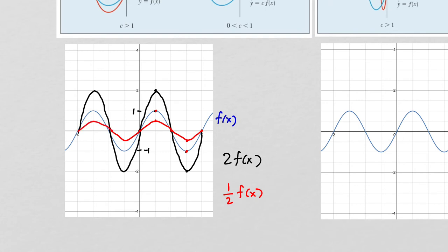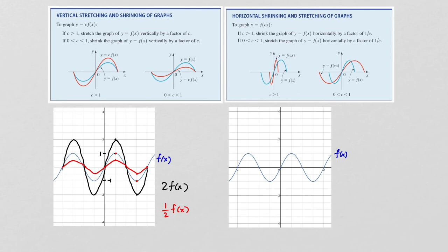So we can stretch or shrink the graph vertically. If c is greater than 1, it's a stretch; if c is less than 1, it's a shrink. We can also do the same thing horizontally, but horizontally shrinking or stretching your graph is a little bit counterintuitive. If you want to know what f(c·x) will do: if c is greater than 1, it's actually going to shrink, and if c is less than 1, it's going to stretch.